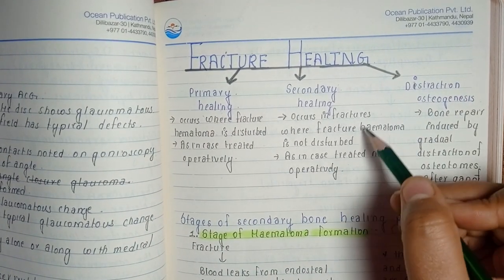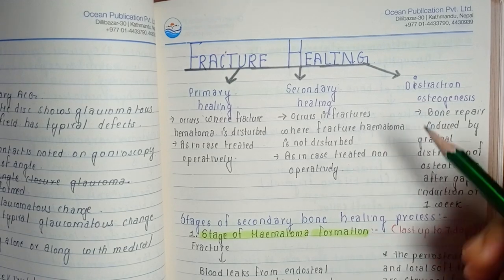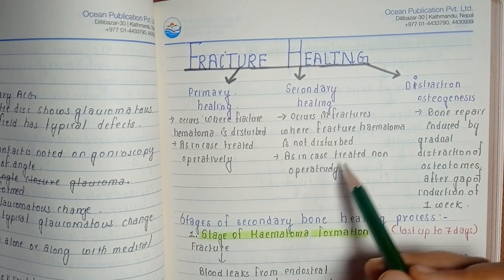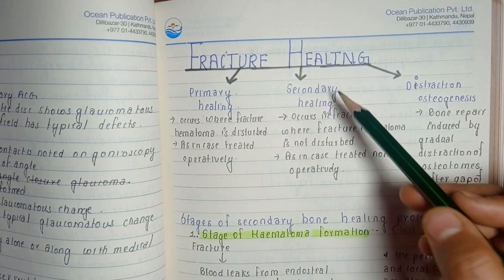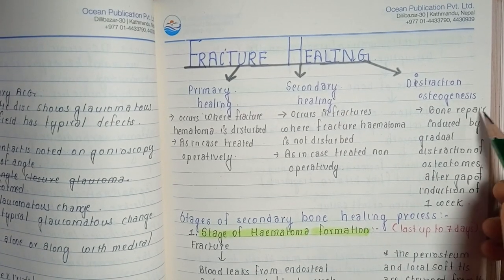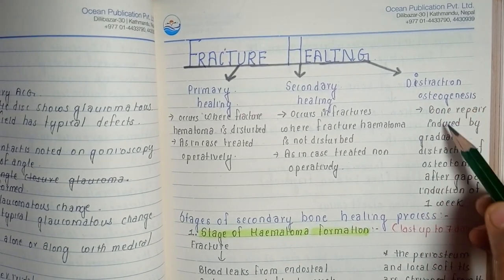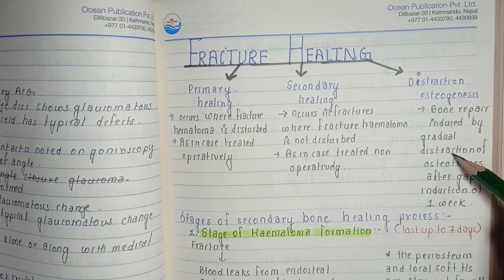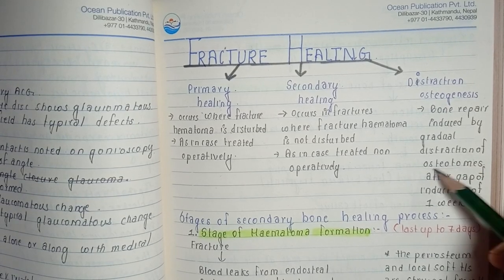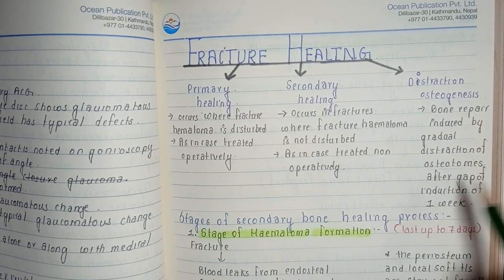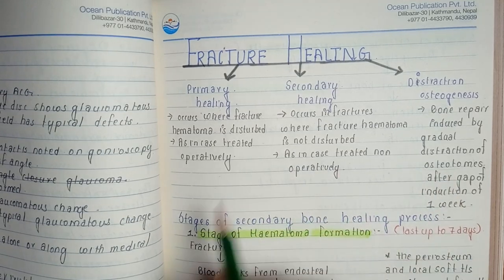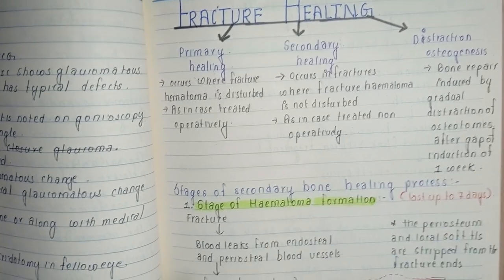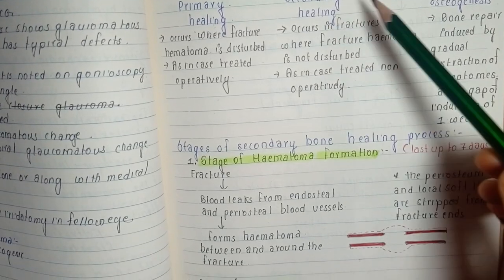In secondary healing, the hematoma is not disturbed and it does not require operative treatment. Distraction osteogenesis is where bone repair is induced by gradual distraction of the osteotomies. After an induction period of one week, we will discuss the stages of fracture healing in case of secondary healing.